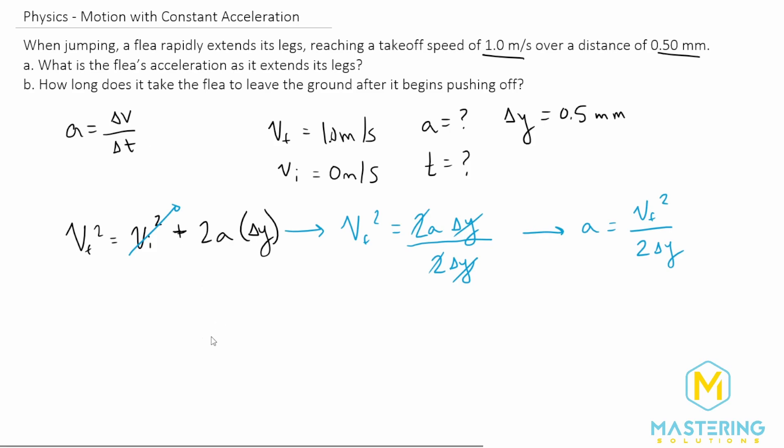So now we can plug in our variables into this equation right here. So we have acceleration is equal to the final velocity which we said is 1 meter per second, and we're going to square that whole value divided by 2 times the delta y which we said was 0.5 millimeters. But we need to convert the millimeters to standard units and my favorite way to do it is to leave the number alone and to change this into what it represents which is 0.5 times 10 to the negative 3 meters. So we have 0.5 times 10 to the negative 3 meters.